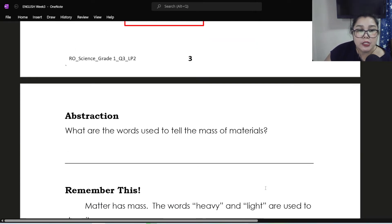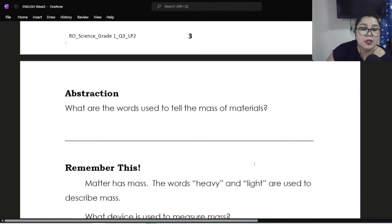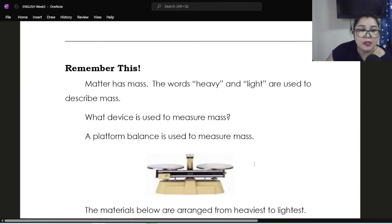If you're done, now proceed with abstraction. What are the words used to tell the mass of materials? What did we use? What are those phrases? To identify which is lightest, which is heaviest, and in case they're the same. Remember this. Matter has mass. The word heavy and light are used to describe mass. What device is used to measure mass? So when we say device, a tool or an object in measuring.